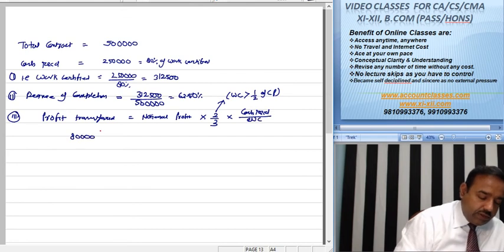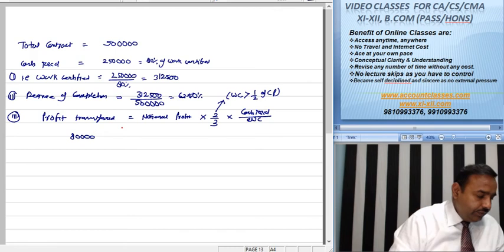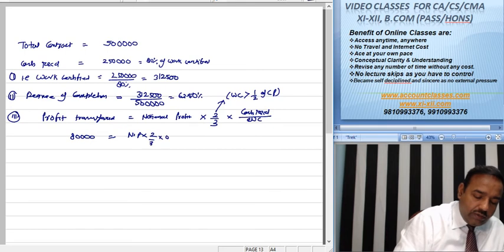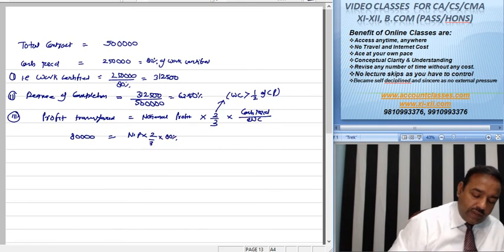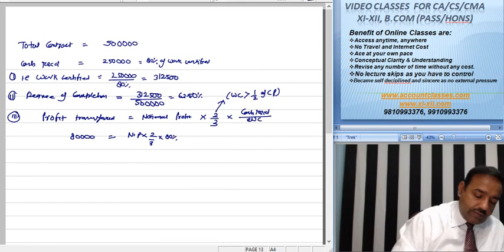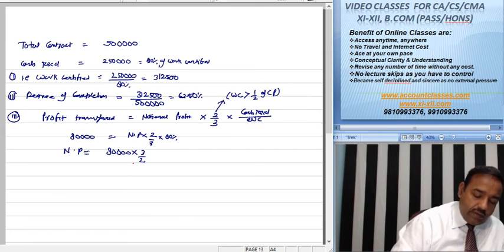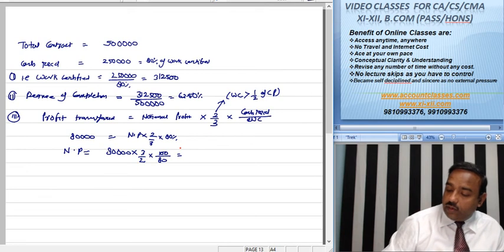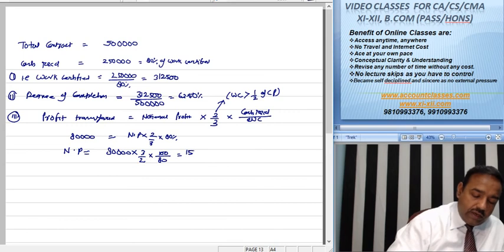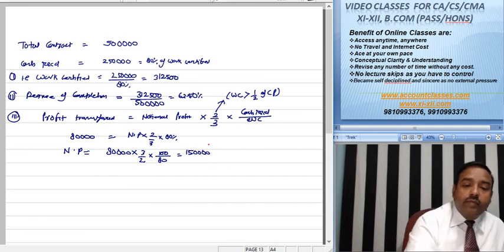This gives us 80,000. 80,000 equals notional profit times 2/3 times 80%. So, notional profit equals 80,000 times 3/2 times 100 upon 80. The value equals 1,50,000. So, notional profit is equal to 1,50,000.